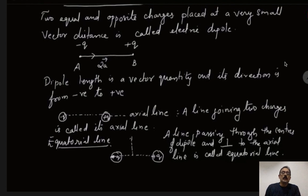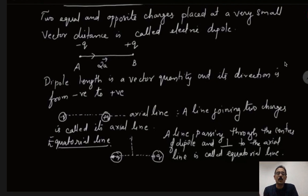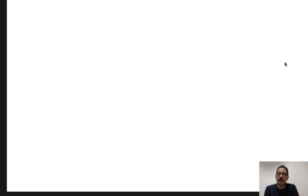To summarize: an electric dipole consists of two equal and opposite charges placed at a very small vector distance. The dipole length is a vector quantity and its direction is always from negative to positive. A line passing through the centers of the charges is called the axial line, and a line perpendicular to the axial line is called the equatorial line.